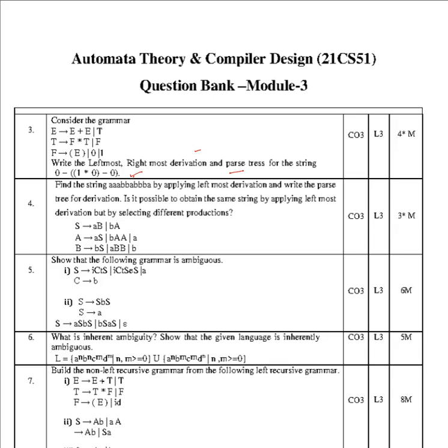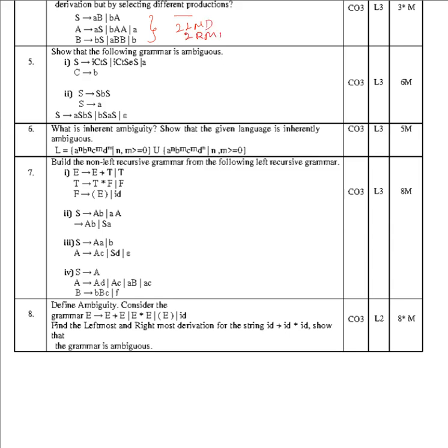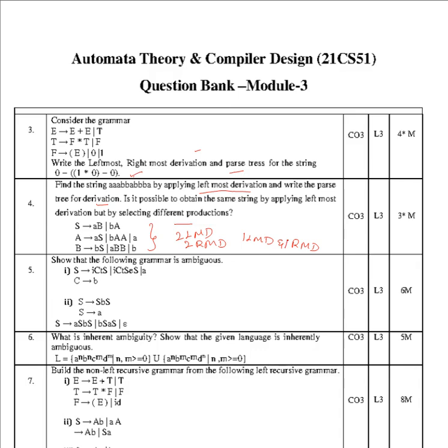For this given string, apply the leftmost derivation and write the parse tree for the derivation. Is it possible to obtain the same string by applying leftmost by selecting different productions? Here you have to consider any string using this grammar. If you're able to derive the same string by applying two times LMD or two times RMD, or one time LMD and one time RMD, and construct two different parse trees, then say that grammar is ambiguous for any given string.